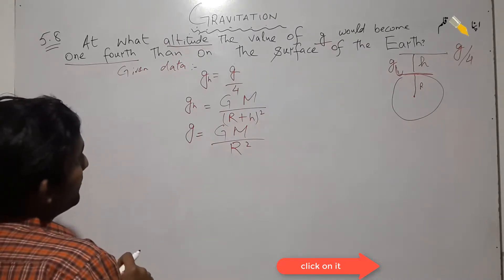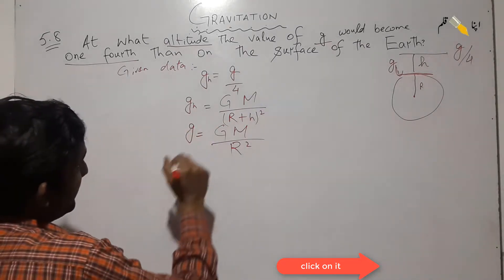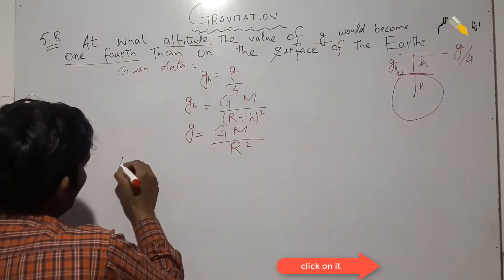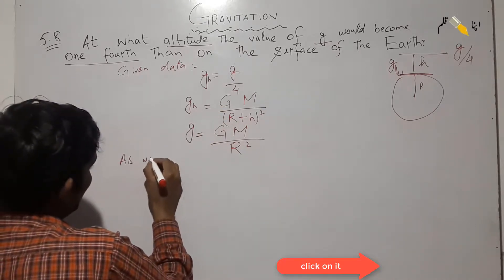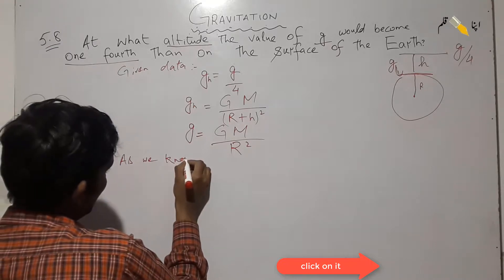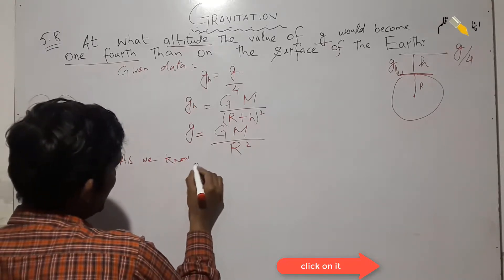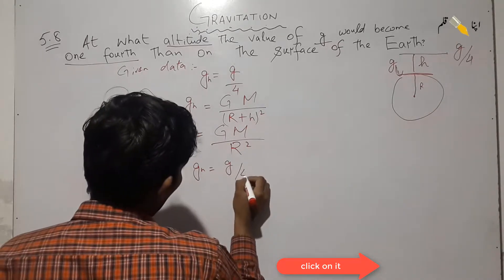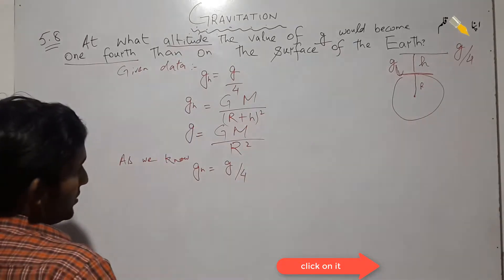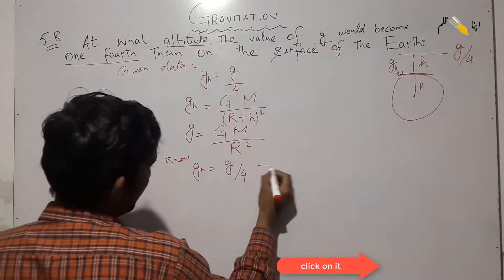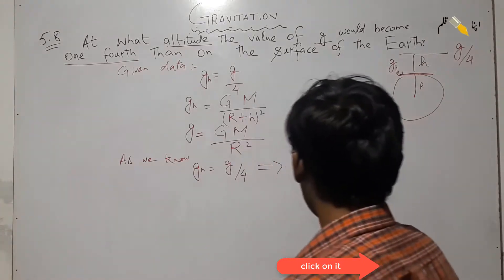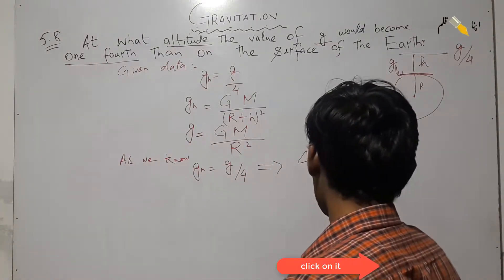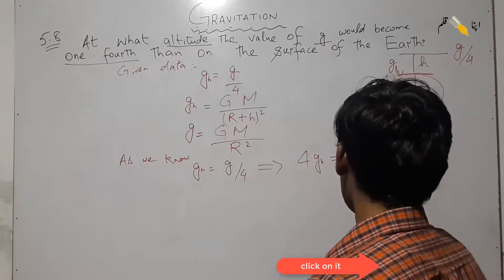We can conclude that as we know, g_h is equal to g divided by 4. So we can write this as: 4 times g_h equals g.